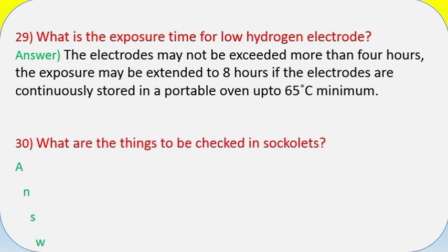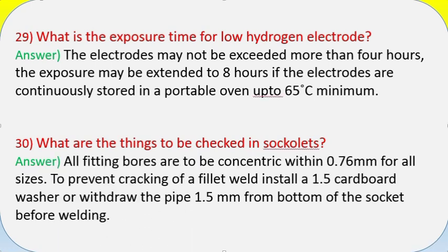Question 30: What are the things to be checked in sockolets? Answer: All fitting bores are to be concentric within 0.76 mm for all sizes. To prevent cracking of a fillet weld, install a 1.5 mm cardboard washer or withdraw the pipe 1.5 mm from the bottom of the socket before welding.